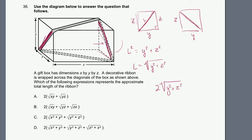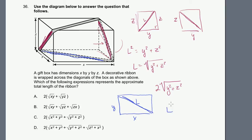That accounts for the two red parts of the ribbon. Now, what is this length on the base? If we draw the base of this rectangle, the depth is y and the width is x. The ribbon goes across it, so l squared equals x squared plus y squared, or l equals the square root of x squared plus y squared.